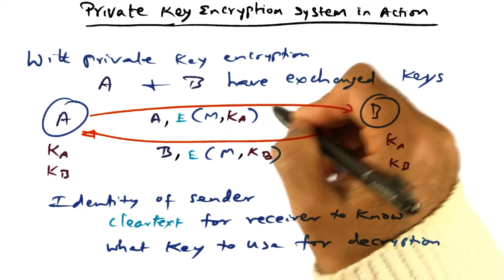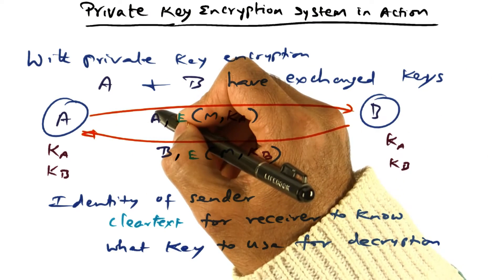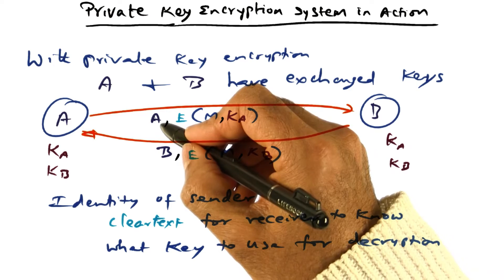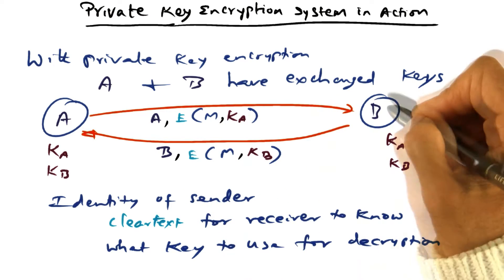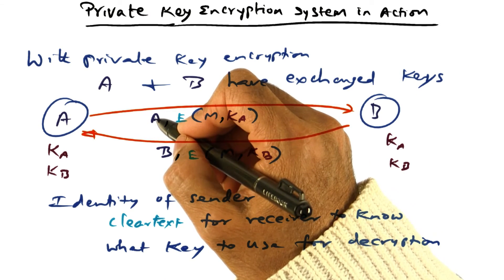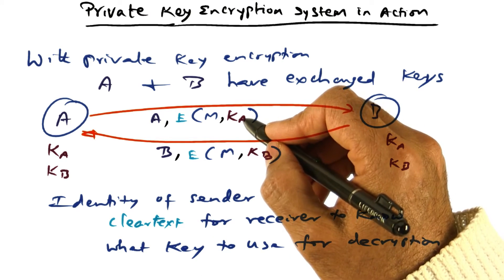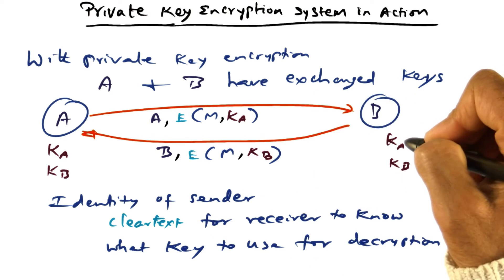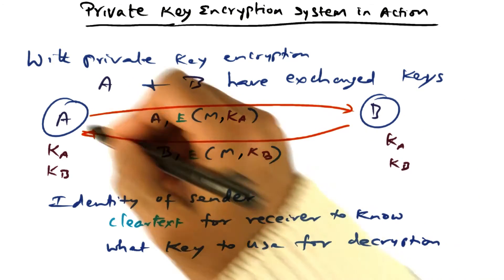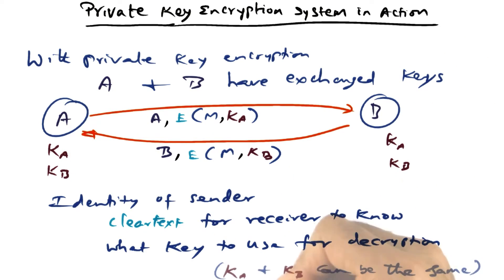This is the format of a message going from A to B: the identity of the sender in clear text, meaning that looking at this, B will immediately know this message is from sender A, and therefore should use key KA to decrypt the ciphertext. And vice versa when A gets a message from B.